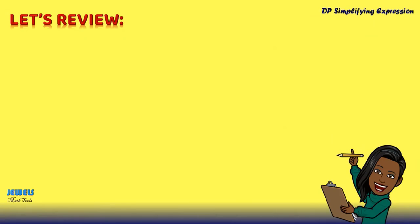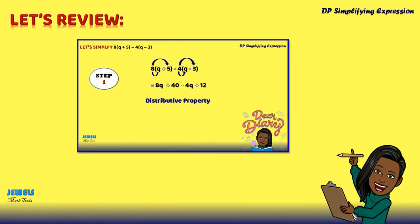Let's review what we did today. In our first step, we applied our distributive property by multiplying our terms outside of our parentheses by everything inside of their respective parentheses.